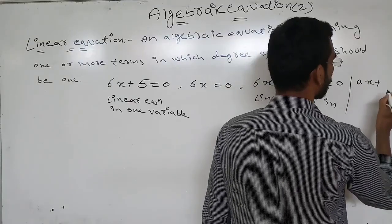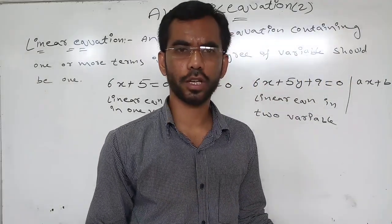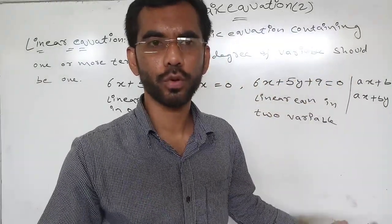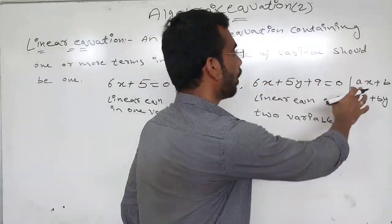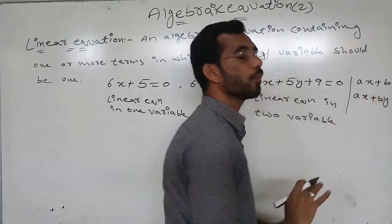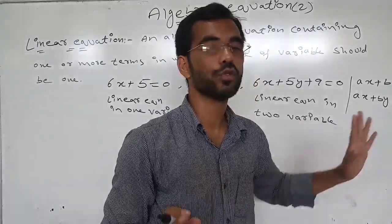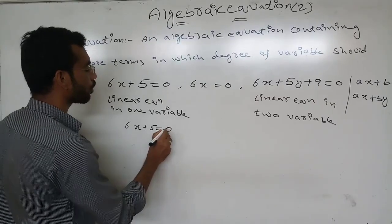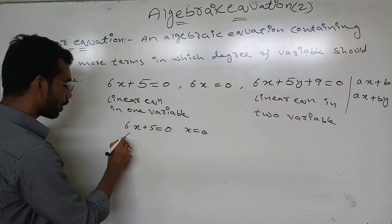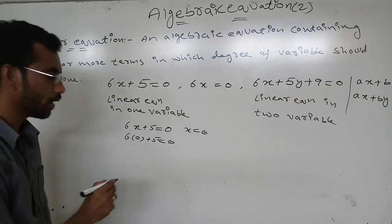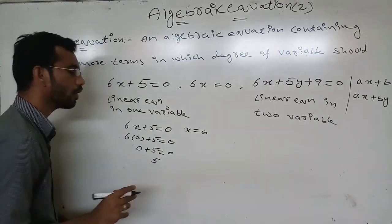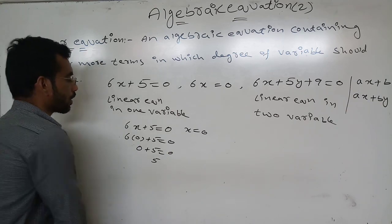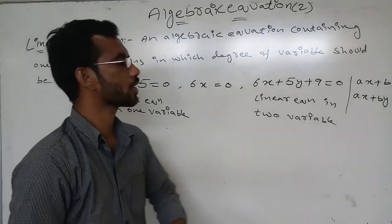The general forms are: ax + b = 0, or ax + b₁ = c. For a linear equation in one variable, a (the coefficient of x) should not be zero. For two variables, the coefficients of x and y should not be zero. For example, if x = 0 in 6x + 5 = 0, we get 0 + 5 = 0, which gives only 5 with no variable — so it is not a linear equation.